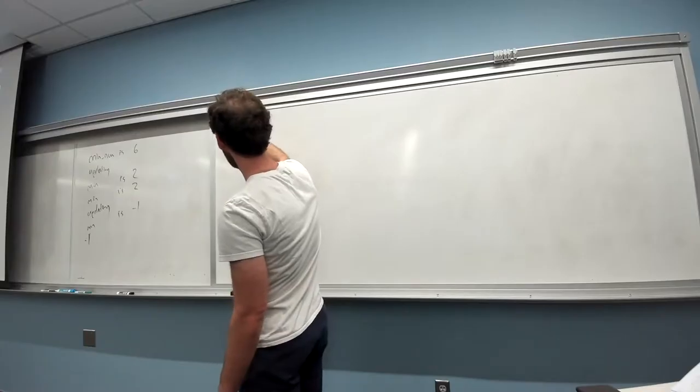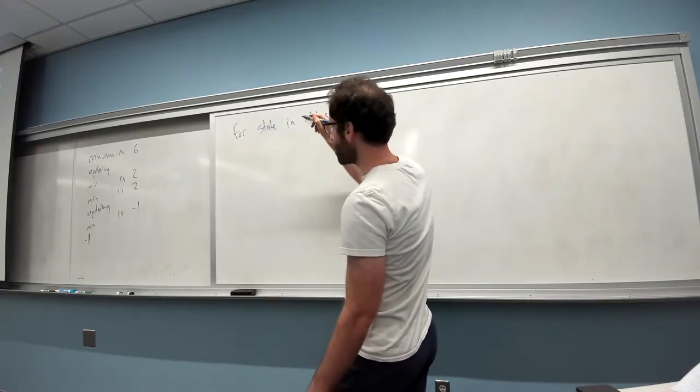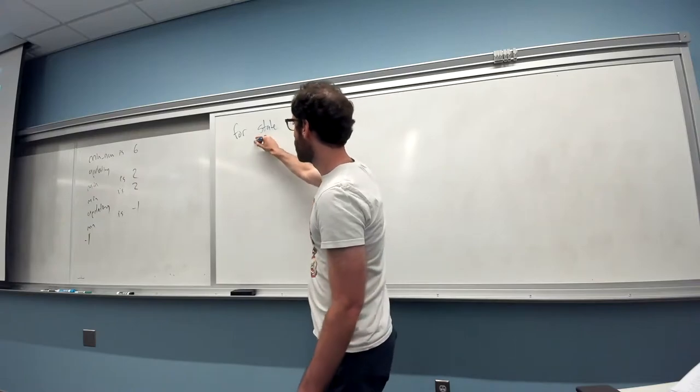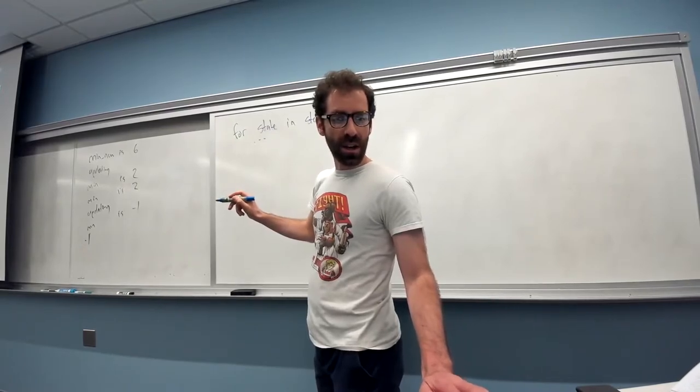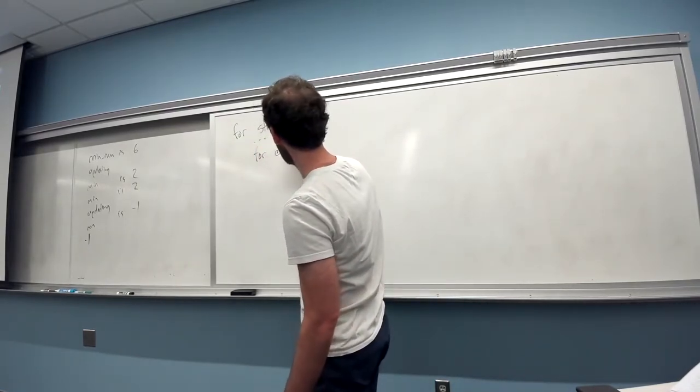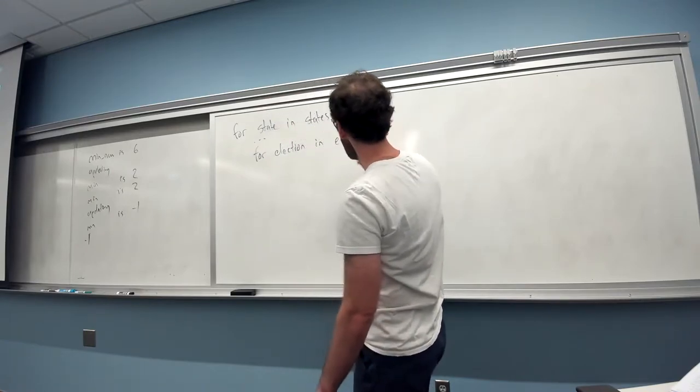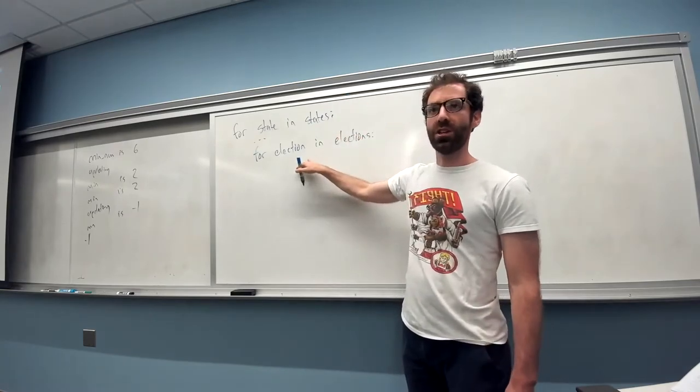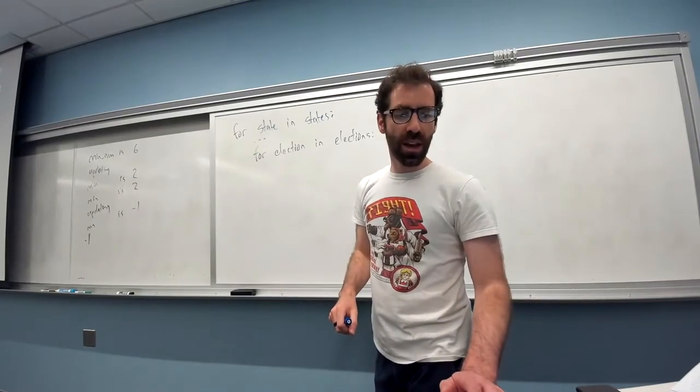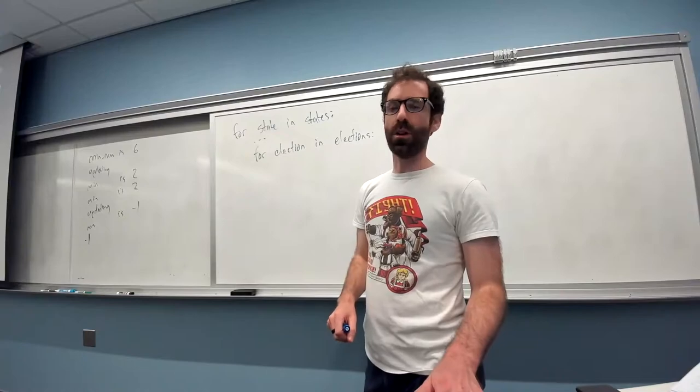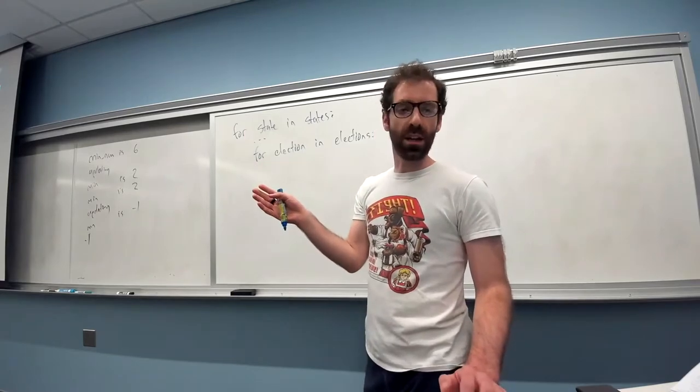So to sketch this out a bit, we have something like for state in states, and then somewhere inside there's this initialization step, and then inside this loop over states, we have a loop over elections - over all the Alabama 1, Alabama 2, and so on. Inside of that is this generate list of vote party tuples step.